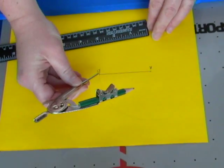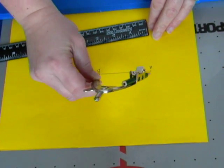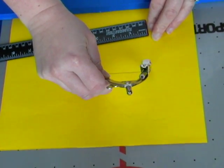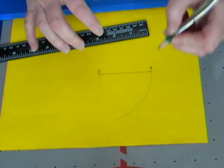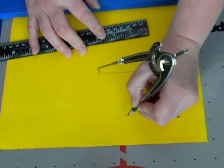I'm going to pick up my compass and move it to B. It should still be the same length. Starting below, I draw a nice smooth arc. This point of intersection is called C.